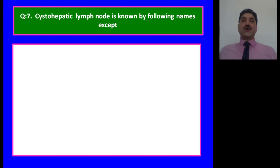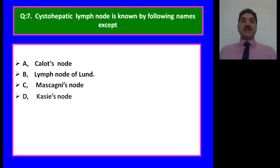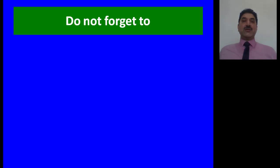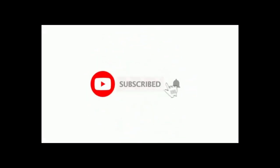The cystohepatic lymph node is also known by the following names except: A — Calot's node; B — lymph node of Lund; C — Mascagni's node; D — Casai's node. The answer is D — Casai's node is not a recognized alternate name. Do not forget to like, subscribe, and share Dr. Salim's anatomy lectures on YouTube. Thank you for watching. Press the bell icon to remain updated about more video uploads.